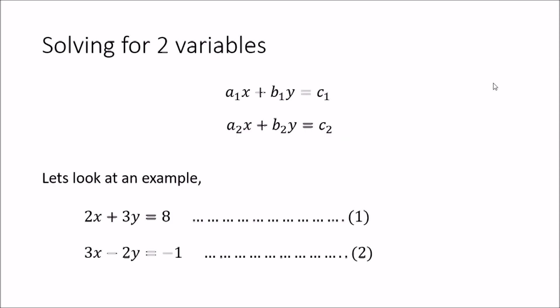Welcome to this tutorial on basic mathematics. We are going to look at simultaneous equations and how to solve them. We'll start with the two-variable scenario, where you have two equations to find the values of two variables. The general form is a1x + b1y = c1 and a2x + b2y = c2, where a1, b1, c1 and a2, b2, c2 are coefficients. The objective is to remove one variable so we are left with one equation and one unknown.